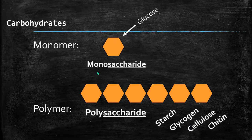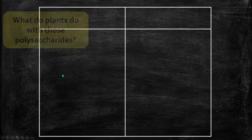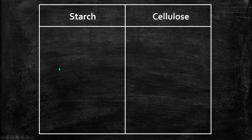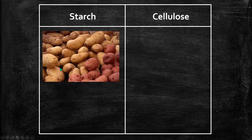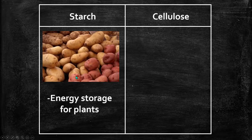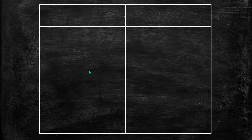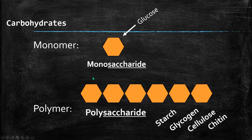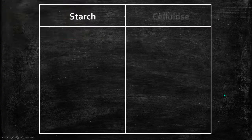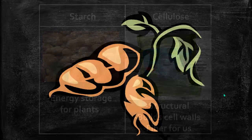Examples of polysaccharides include starch, glycogen, cellulose, and chitin. In plants, there's starch and cellulose. Starch is how plants store their energy — when you eat a potato, you get a lot of energy because you're eating starch. Cellulose is what plants use to build their cell walls. Both starch and cellulose are long chains of glucose monomers hooked together.